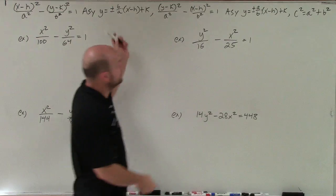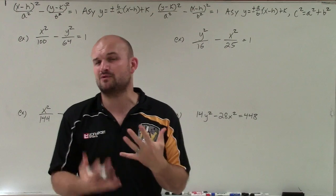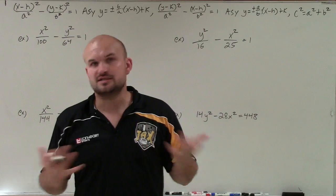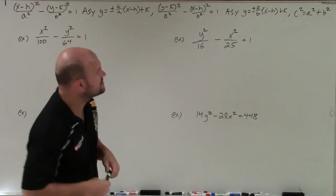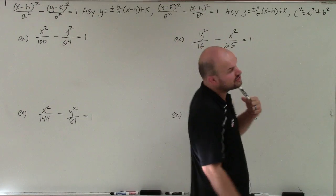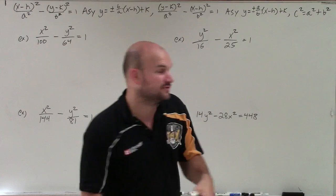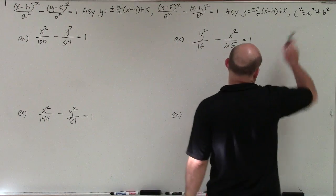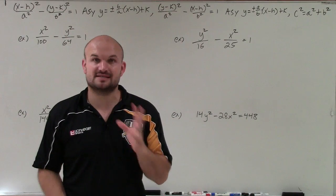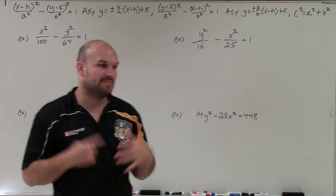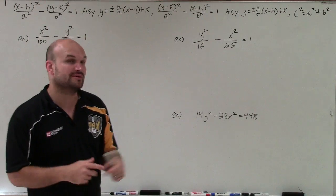The other main difference is that hyperbolas have asymptotes. For the first problem, I'll show you how to graph it and use the co-vertices to help you graph it so you get an idea of what it looks like — I'll graph the first two. Also notice the relationship between a, b, and c: it's not c squared equals a squared minus b squared like it was for an ellipse. For a hyperbola, the relationship is c squared equals a squared plus b squared. But the overall process is going to be exactly the same as what we did for an ellipse.